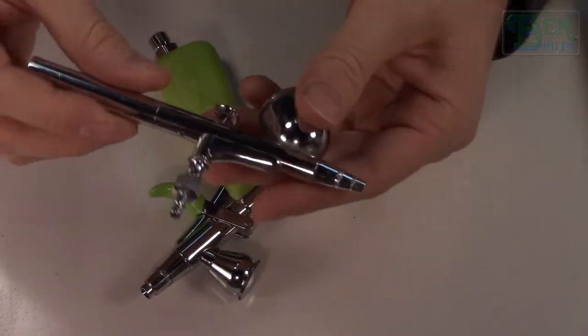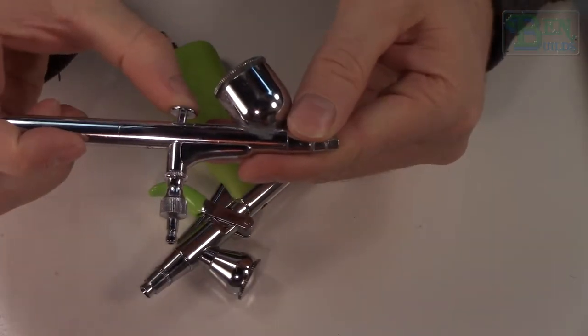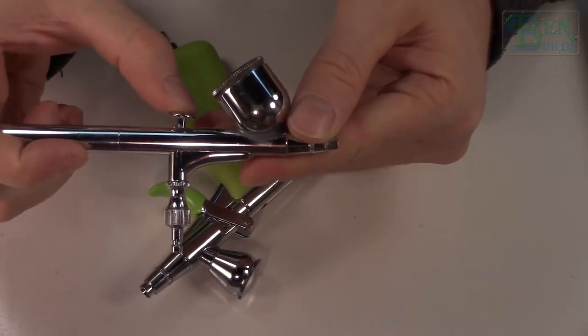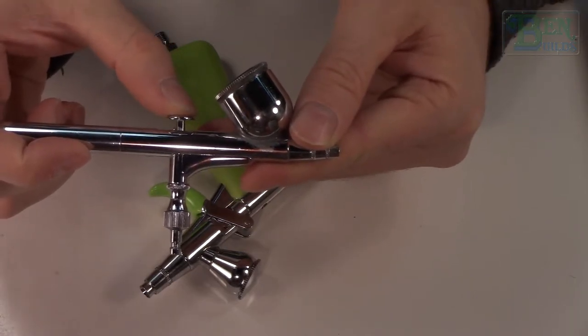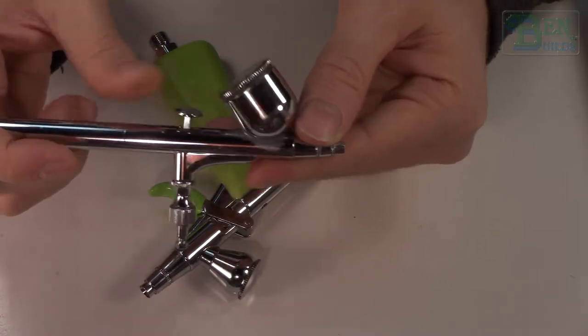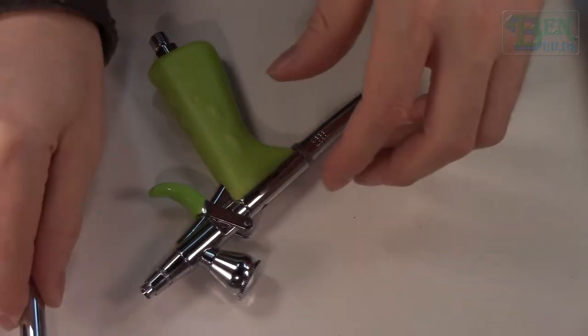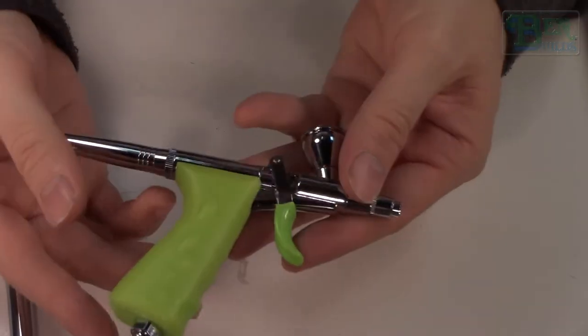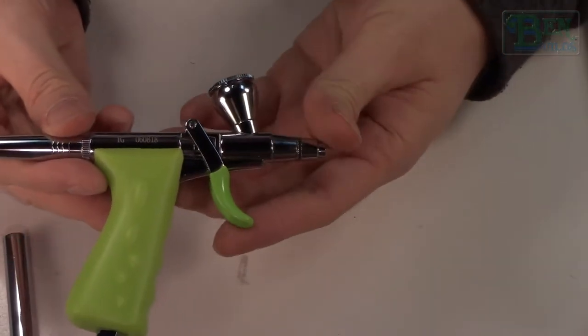Based on this versus the Iwata, the Iwata is all metal but you push down for air and you pull back for paint. That's a pretty standard airbrush configuration, I'm used to that. With the Grex, this isn't the case. So what happens is there's a certain section of the trigger pull that only does air.